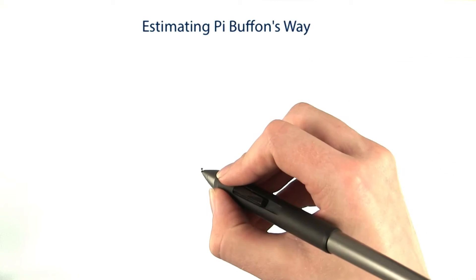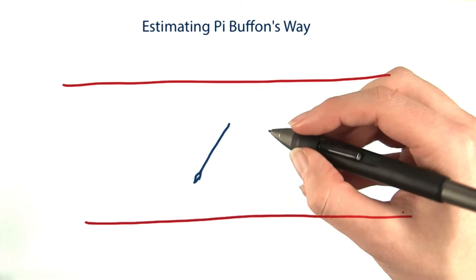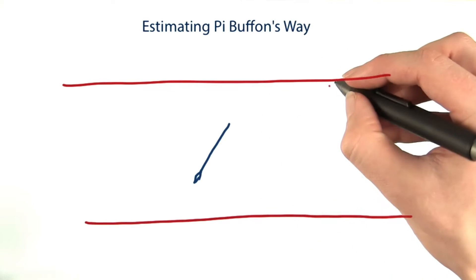Here's another way of estimating pi. Take a one inch needle and repeatedly drop it on a sheet of ruled paper whose lines are two inches apart.